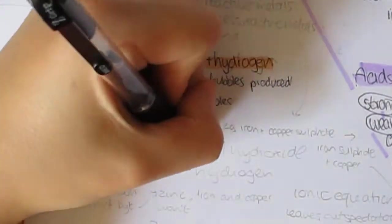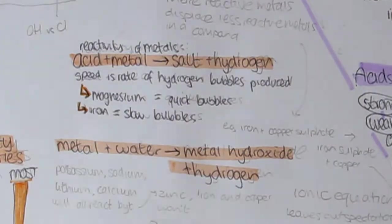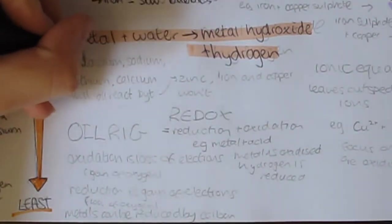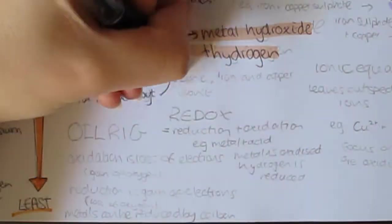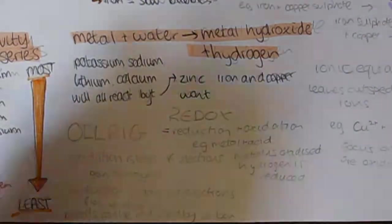Metal plus water makes a metal hydroxide plus hydrogen. Potassium, sodium, lithium and calcium will all react with water, but zinc, iron and copper will not.